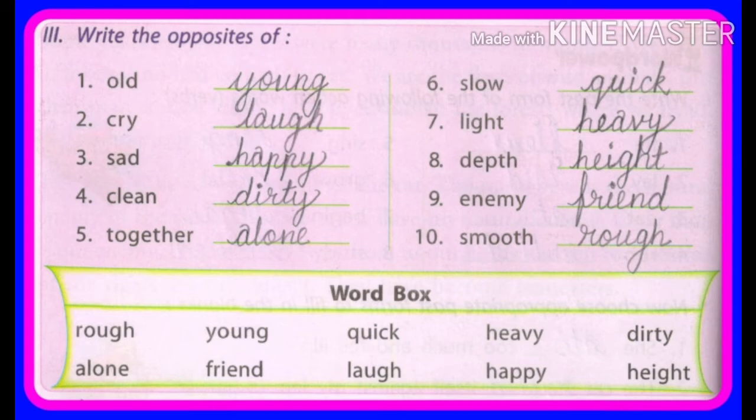Number four: clean — dirty. साफ और गंदा. Number five: together — alone. Together बोलने से सब साथ मिलके, alone बोलने से अकेला. Number six: slow — quick. Slow बोलने से धीरे, quick बोलने से जल्दी.